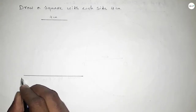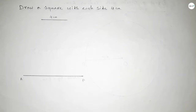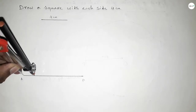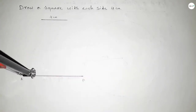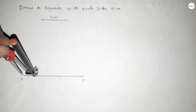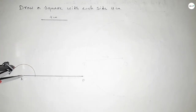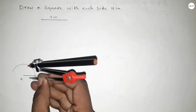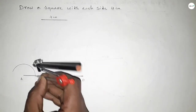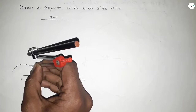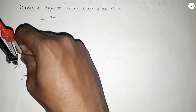Taking a point P on the line. Next we have to draw a 90-degree angle on point A. Putting the compass on point A, taking any length, and drawing an arc.